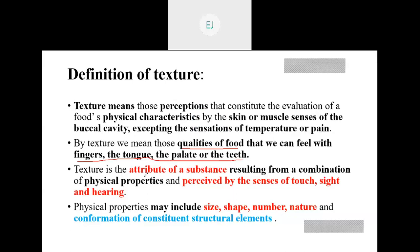Texture is the attribute of a substance resulting from a combination of physical properties, which is perceived by the sense of touch, sight, and hearing. In case of physical properties, that includes size, shape, number, and nature — these are called the physical properties.